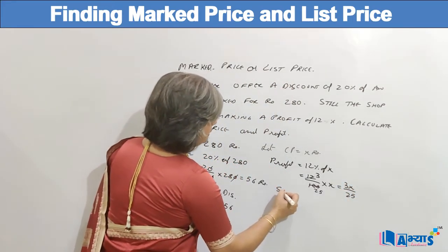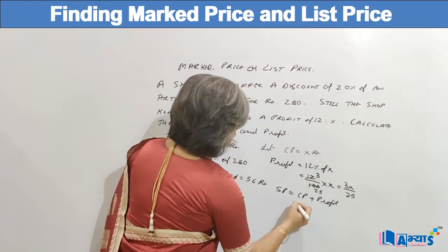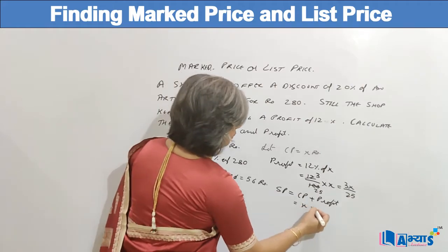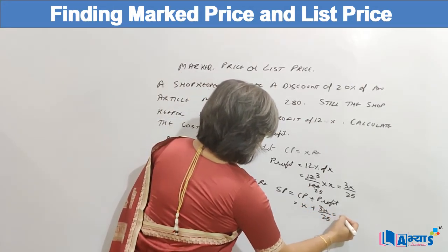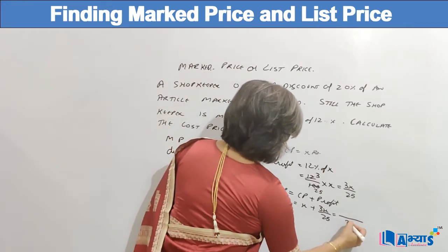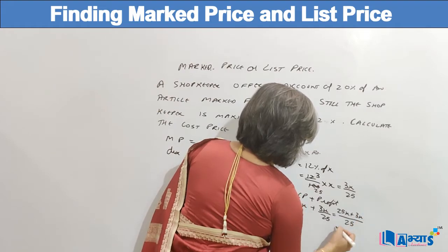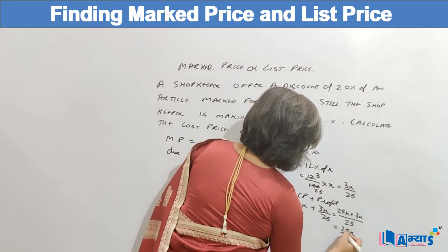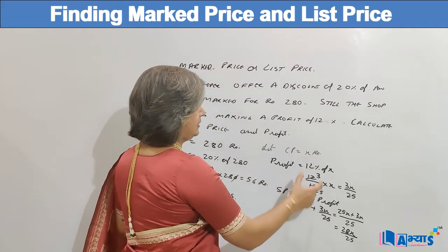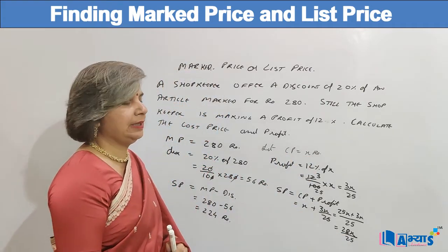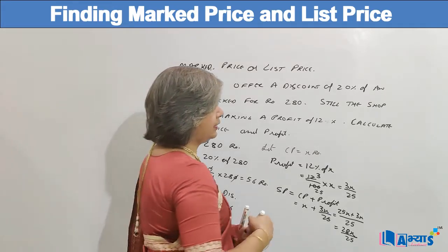The selling price is cost price plus profit. So cost price is X and profit is 3X/25. Taking the common denominator of 25, we get 25X + 3X, which equals 28X/25. So when the cost price was X, the selling price came out to be 28X/25. And we know the selling price was Rs. 224.